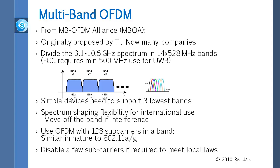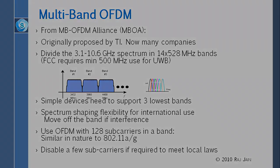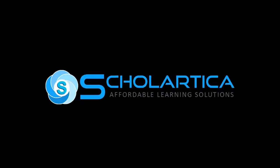To summarize: UWB allows you to use a lot of spectrum at very low power — below the noise level — to do very high-speed communication. When the FCC allowed this in 2002, two groups were formed. One did the pulse-based approach, DS-UWB, and the other is doing OFDM using the same spectrum, which is Multi-Band OFDM. That finishes our lecture on UWB.